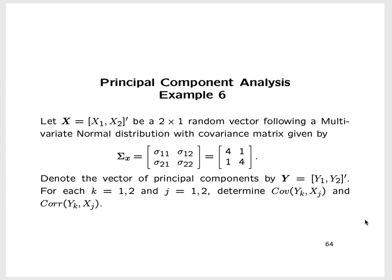Let x be a two-by-one random vector following a multivariate normal distribution with covariance matrix given by the two-by-two matrix with entries four and one in the first row and one and four in the second row. The four in the upper left is the variance of x1, the four in the lower right is the variance of x2, and the covariance between x1 and x2 is one.